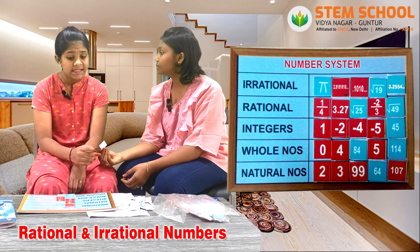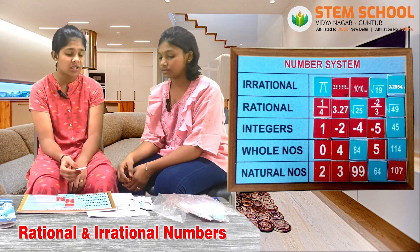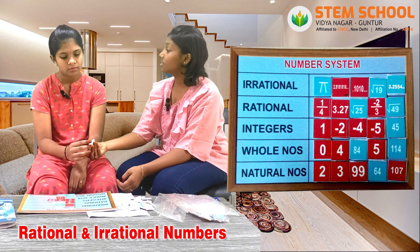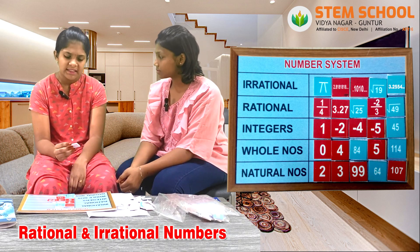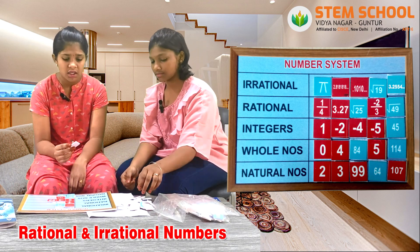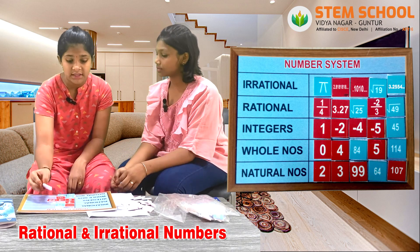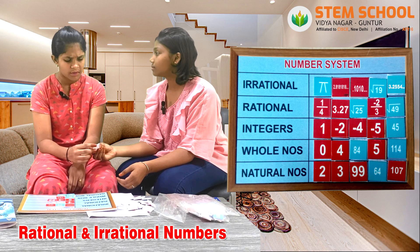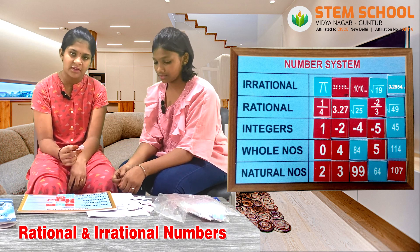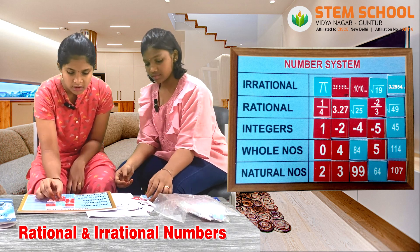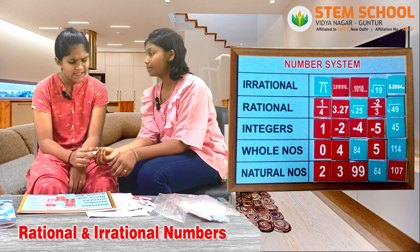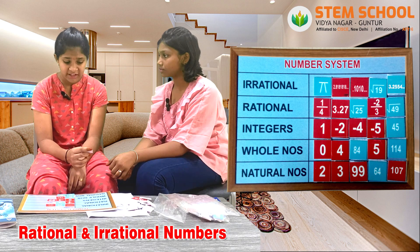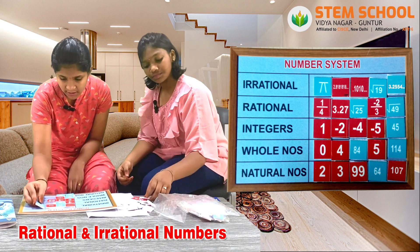What about 99.2? 99.2 can be an integer, whole number and a natural number. Look at this decimal — this decimal looks like a non-terminating decimal, so of course it is an irrational number. Root of 49? Root of 49 is 7, so it is a rational number. Root of 19? 19 is a prime number and not a perfect square, so it is an irrational number.